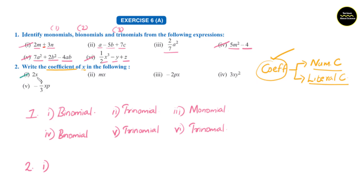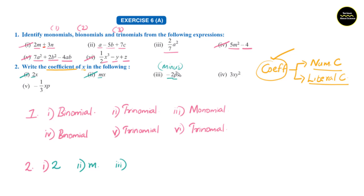Question number 1: 2x. Here there is only one coefficient, which is the numerical coefficient 2. The answer is 2. Second question: mx. There is one coefficient here and m is a literal coefficient. As I said, only 'coefficient' is asked, so m is the answer. Third question: minus 2px. The coefficients are minus 2p. Please don't exclude the minus sign — it is also included in the coefficient. The answer is minus 2p.